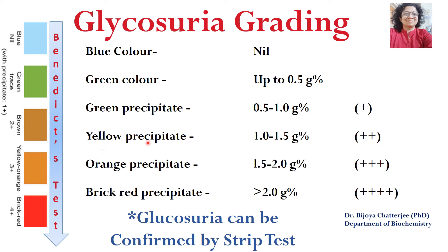Yellow precipitate means the concentration of reducing sugar is between 1 to 1.5 gram percent, indicated by 2 plus signs. When the precipitate is orange, the concentration lies between 1.5 to 2 grams percent, indicated by 3 plus signs. When the color of the precipitate is red, the concentration of sugar is more than 2 gram percent, indicated by 4 plus signs.